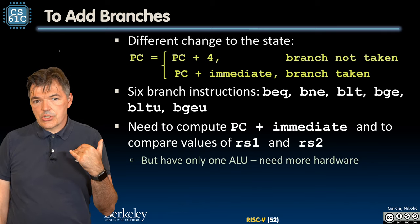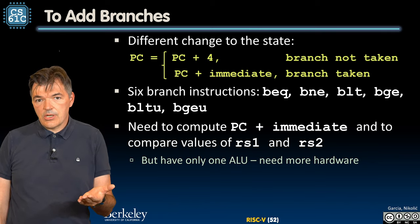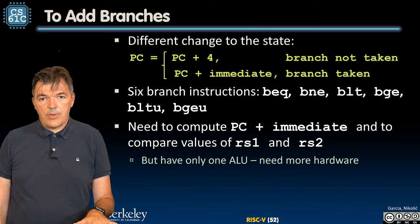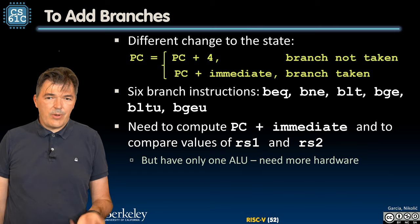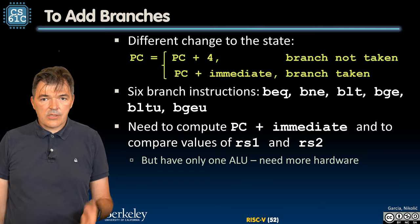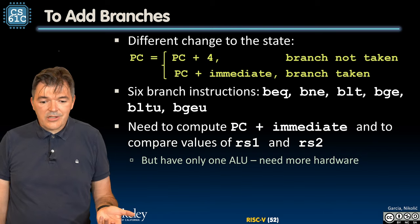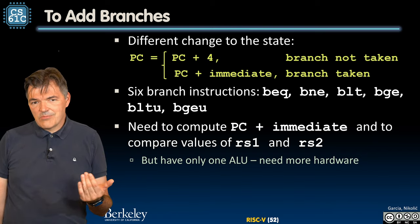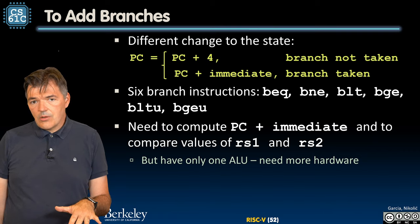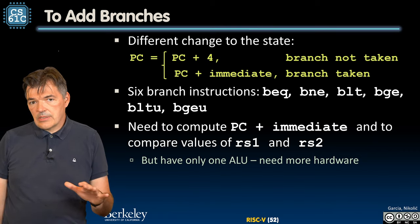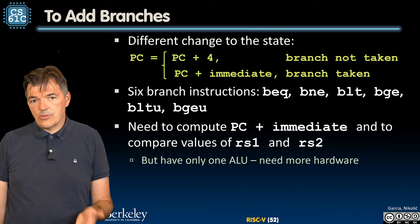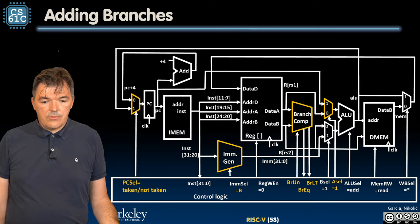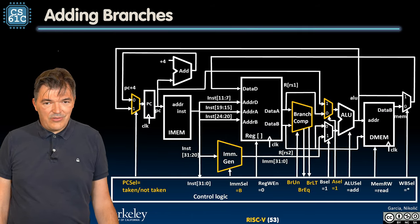Now you may want to think what should the additional hardware do? Should it be used to calculate PC plus immediate or to perform the comparison? Well, we have a powerful ALU that can do all kinds of things, so let's not mess with that. And it is already wired to take on the immediate. So let's not touch that. What we should add is a simpler hardware that is going to perform the branch comparison.